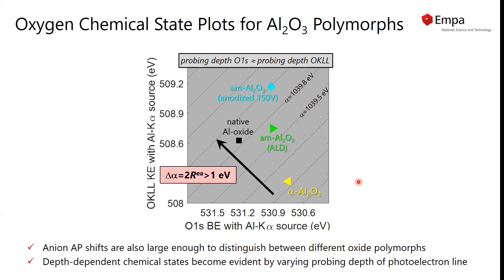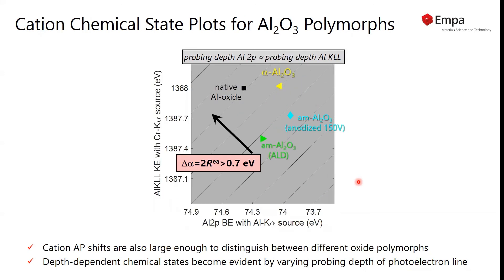How about the cation Auger parameter? Here we plot the cation Auger parameter in a Wagner plot. We have the aluminum 2p line measured with the aluminum source plotted against the aluminum KLL line measured with the chromium source.